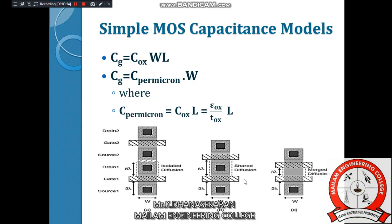The second type is shared diffusion. It means that drain 1 and source 2 share one common point. If you consider these two terminals together and place them at one point, then the second MOSFET's source and the first MOSFET's drain share a common node. That is called shared diffusion.